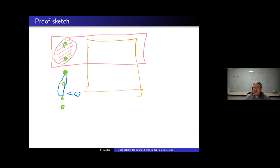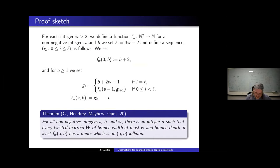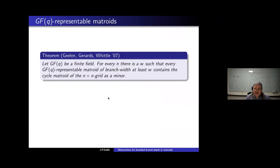Question from Ben Moore: Would the conjecture of DeVos, Kwon, and Oum imply a non-trivial automorphism group theorem for matroids, like what happens for tree depth and graphs?